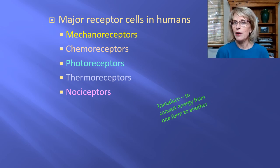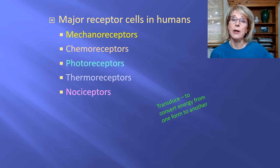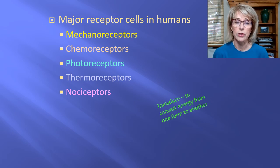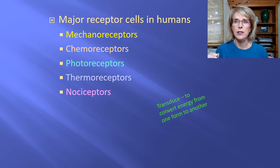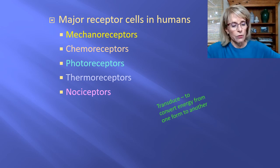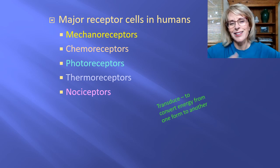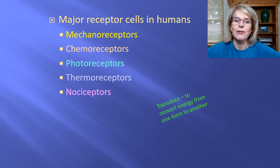Chemoreceptors are modified to detect the presence of specific chemicals. Chemoreceptor cells work the way the last animation showed. Our chemoreceptors allow us to detect tiny molecules, and we describe those chemicals as things that we can taste or smell. Then we have photoreceptors, which allow us to sense photons of light.